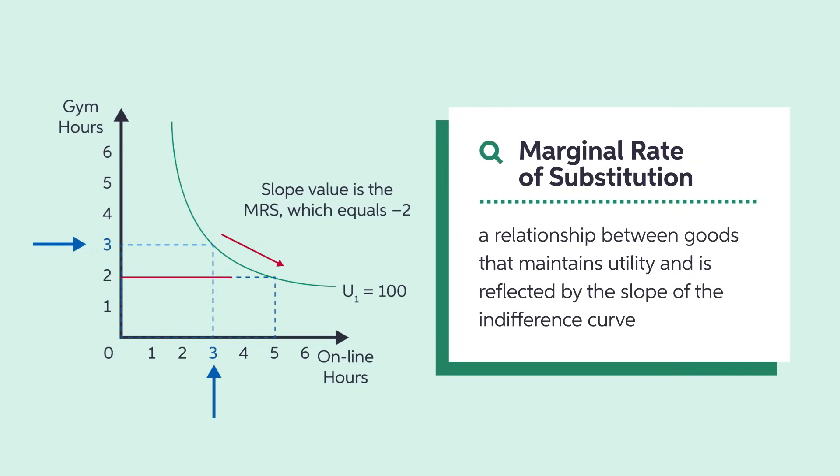The higher the quantity of online hours relative to gym hours, the more online hours that are needed to compensate Garrett for one lost gym hour and still retain the same utility. This arises because consumers generally experience diminishing marginal utility as they consume increasing quantities of any one good.